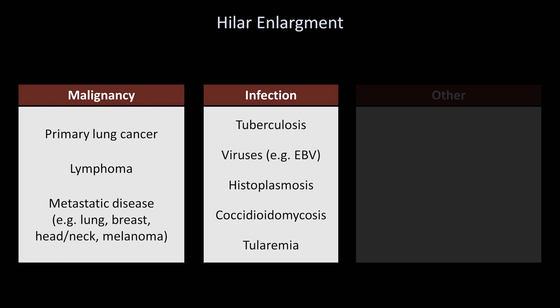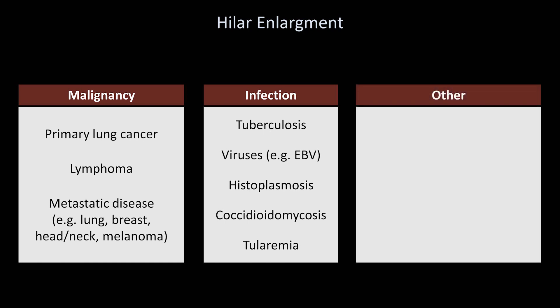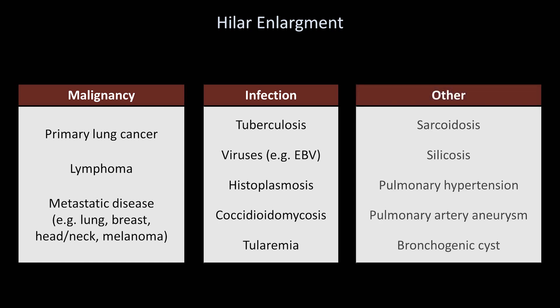Finally, in the other category are sarcoidosis, silicosis, pulmonary hypertension, a pulmonary artery aneurysm, and a bronchogenic cyst.